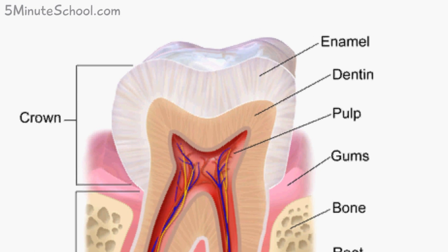The crown consists of three layers. We have the enamel, which is the hardest substance in the body; the dentin, which is the second hardest substance in the body; and the pulp, which contains a lot of blood vessels and nerves.